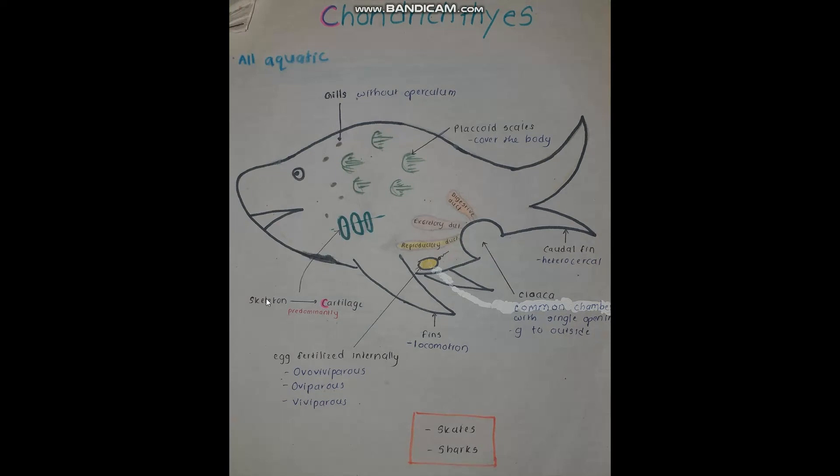Chondrichthyes have a skeleton composed of cartilage. Here I have highlighted the letter C in the topic name, as cartilage starts with a C. This is because Osteichthyes also have bony cartilage and these two could get mixed up.